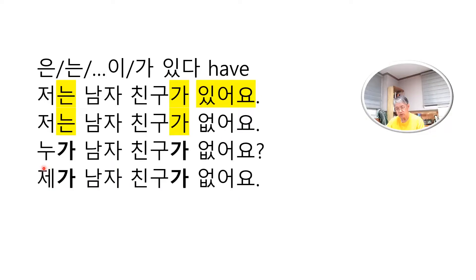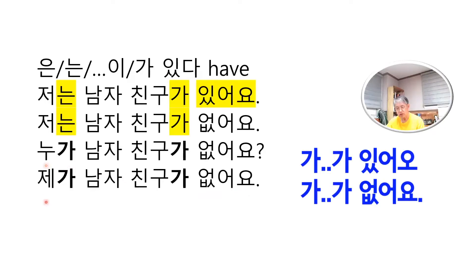When you are asked a 누가 question, you answer with the 가 subject particle. 누가 남자친구가 없어요 — Who does not have a boyfriend? 제가 남자친구가 없어요 — I don't have a boyfriend. 누가 남자친구가 있어요 — Who has a boyfriend? 제가 남자친구가 있어요. When asked a 누가 question, you answer with 가 가 있어요 or 가 가 없어요.